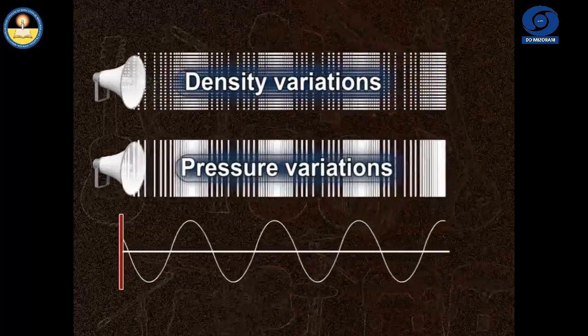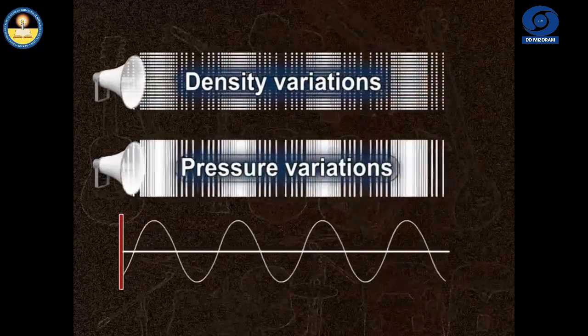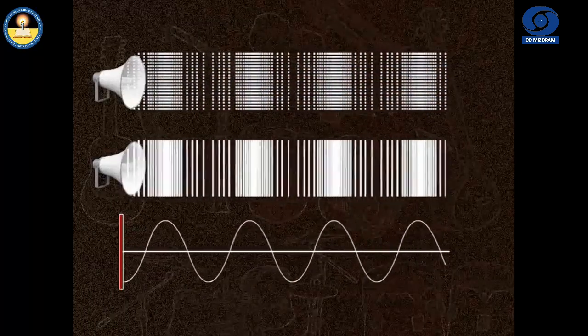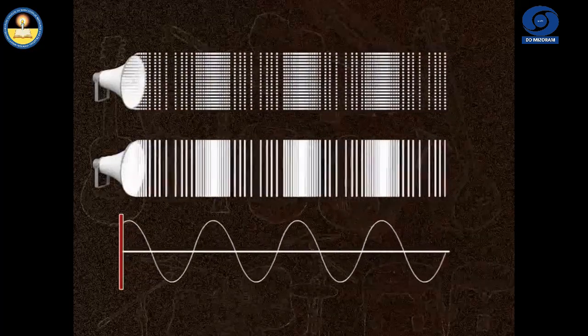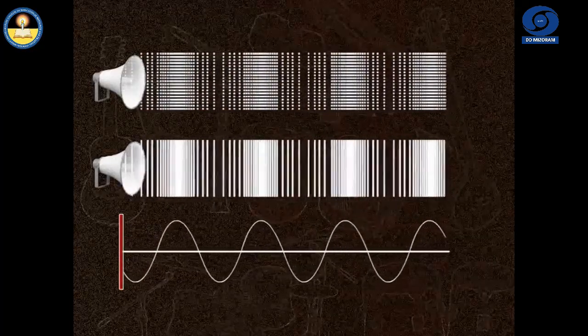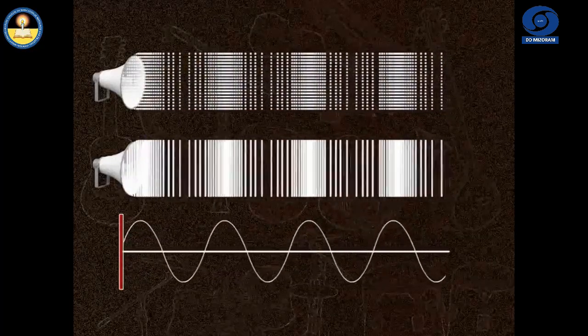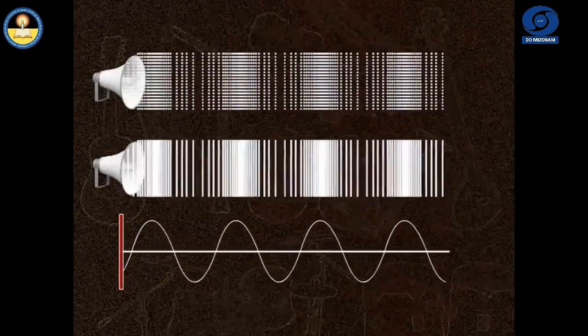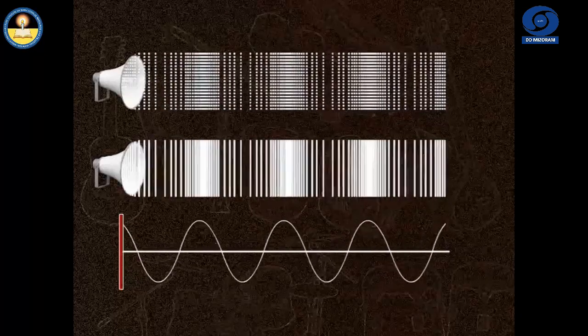The density as well as the pressure of the medium at a given time varies with the distance above and below of their respective average values.